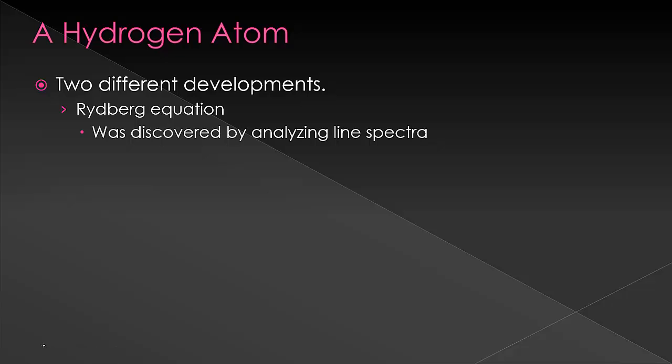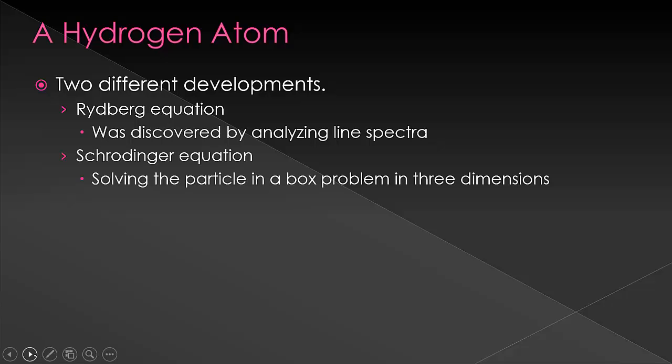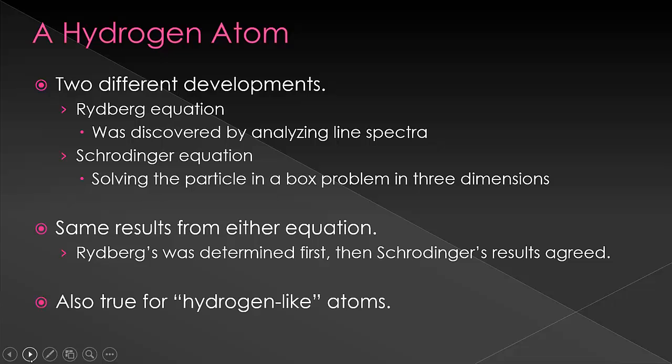Here, Schrodinger worked through the quantum theory as we talked about doing for the particle in the box. Either method yields the same result, Schrodinger's is just a little bit more detailed because it has more constants in there. And these two are also only going to be good for hydrogen-like atoms.